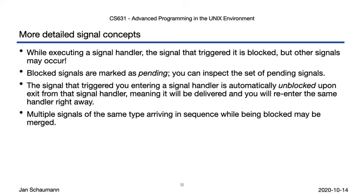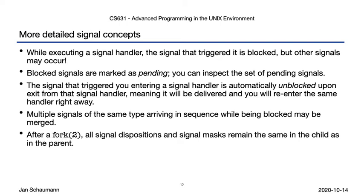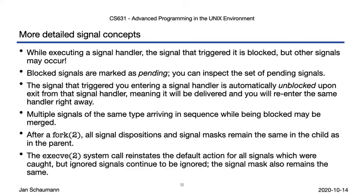Seeing how we can change how our process handles signals, we also need to think about what happens when we fork a new process or exec a new program. Since fork creates a full copy of the current process, all established signal handlers, or other dispositions, are of course inherited by the child. But if we exec a new program, then the established handlers are reset to the default action, while signals that are explicitly being ignored continue to be ignored as well. All of these considerations may be a bit confusing when you first hear about them, so let's take a look at some examples, which I hope you will recreate yourself as well.